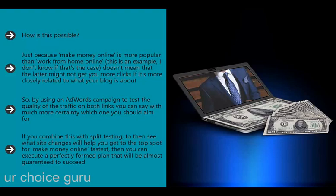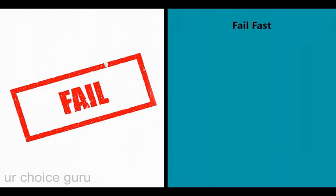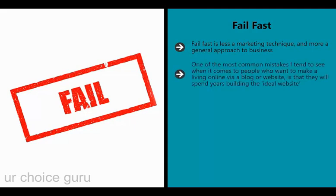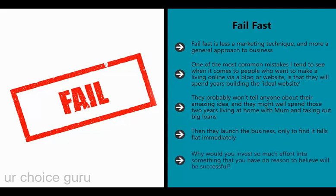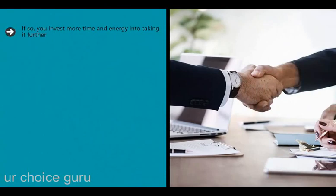If you combine the AdWords keyword test with split testing to see what site changes will help you get to the top spot fastest, you can execute a perfectly formed plan that will be almost guaranteed to succeed. Fail fast is less a marketing technique and more a general approach to business - it means making sure not to invest a huge amount of time into an idea until it has been proven. One of the most common mistakes is spending years building the ideal website, not telling anyone about the idea, living at home and taking up big loans - then launching only to find it falls flat immediately. Why invest so much effort into something you have no reason to believe will be successful?